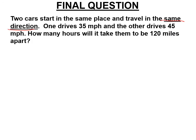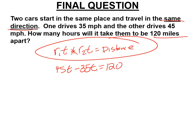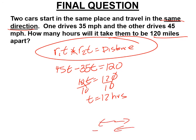This is the same direction — opposite directions in these classic problems is plus, but I wanted to show you both. The first rate times the time plus the second rate times the time equals the distance — that's the equation we'll use for many other things this year. The fastest one has to go first because they're going in the same direction, and this is going to be a minus sign, not a plus, because they're going the same direction. The total distance is 120, so 10t equals 120, divide by 10, and it's going to take 12 hours. Same direction is minus. Good luck with the homework.